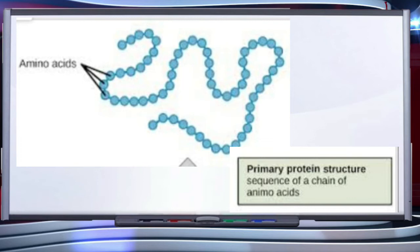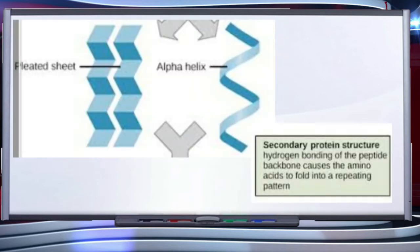A protein is imagined as a line: the left end is represented by the first amino acid and the right end by the last amino acid. The first amino acid is also called the nitrogen-terminal amino acid and the last amino acid is also called the carbon-terminal amino acid.